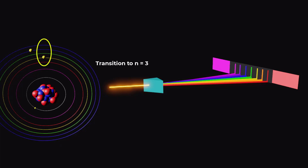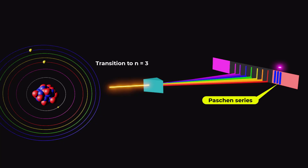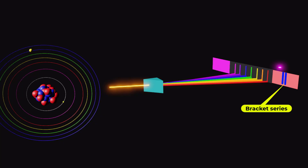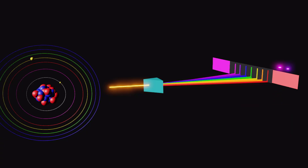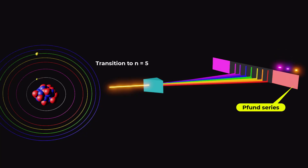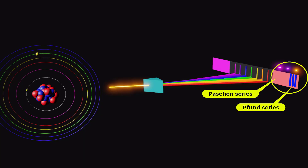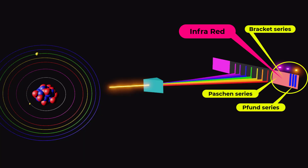When an electron jumps from the fourth or higher energy level to the third energy level, the Paschen series is produced. The Brackett series is produced when an electron jumps from the fifth or higher energy level to the fourth energy level. When an electron jumps from the sixth or higher energy level to the fifth energy level, the Pfund series is produced. All the Paschen, Brackett, and Pfund series belong to the infrared region of the electromagnetic spectrum.